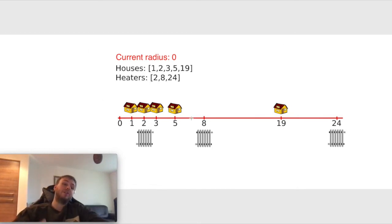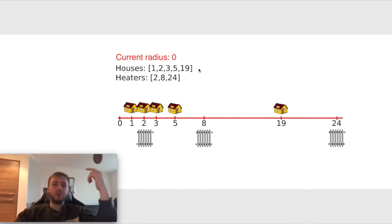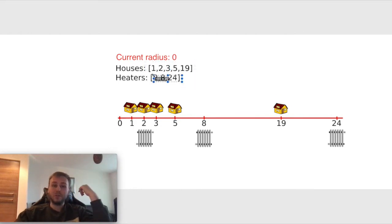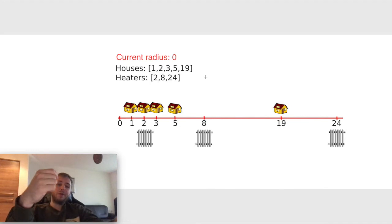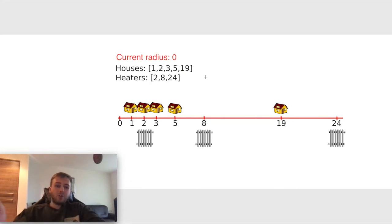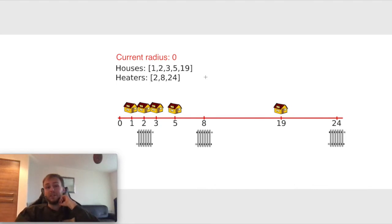Let's check this image to get a better idea of what we need to solve and how we are going to solve it. We want to iterate through all the houses one by one and check the heater on the left side and the heater on the right side from the current house, and update the minimum radius which we need in order to make all the houses warm.